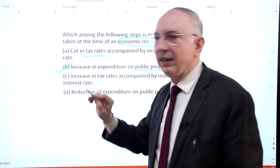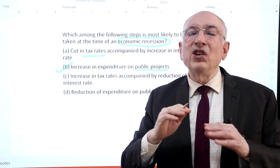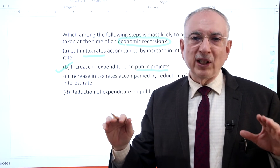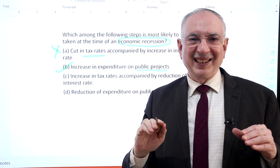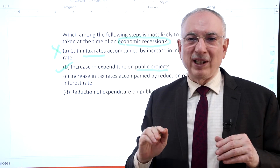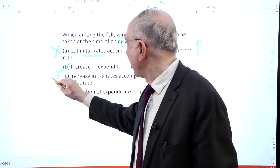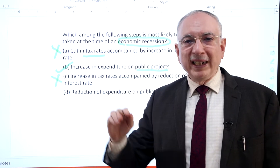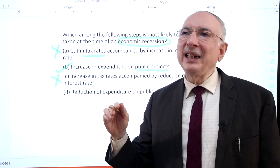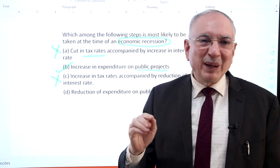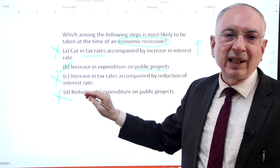Hence statement B is correct. Increase in interest rate results in a credit crunch in the economy, which is not desirable during a recession. Therefore statement A is not correct. Increase in tax rate is also not desirable during recession as income is falling in the economy, so statement C is not correct. Reduction in expenditure on public projects leads to less government expenditure, thereby not contributing to output. Hence statement D is not correct, and it also contradicts statement B. So the right answer is B.